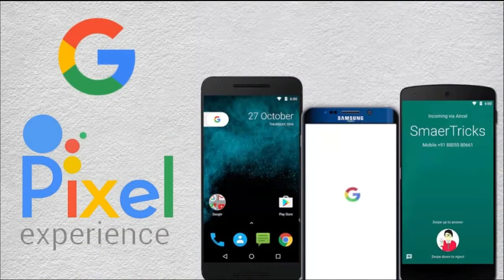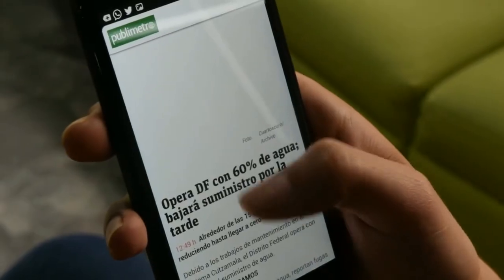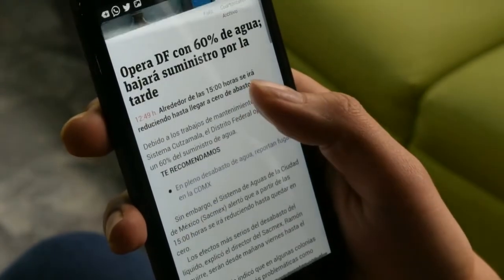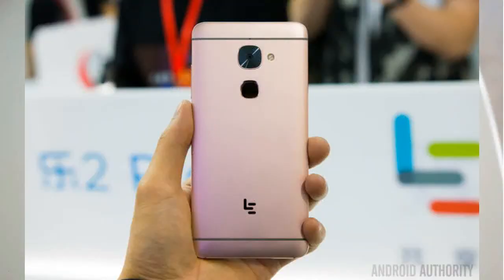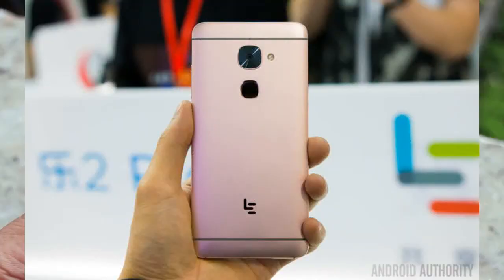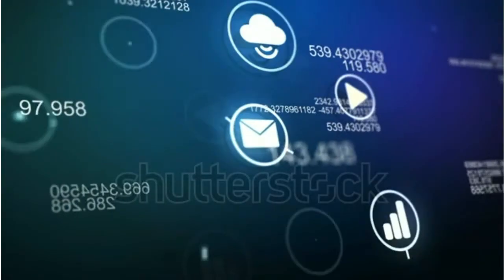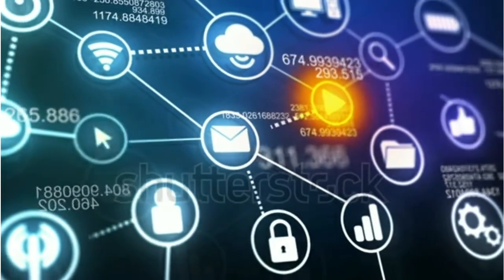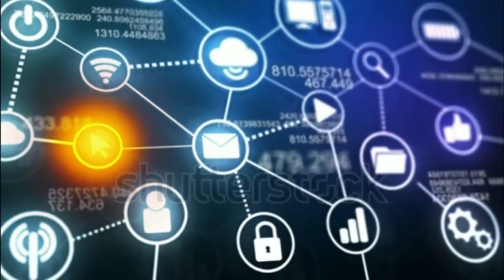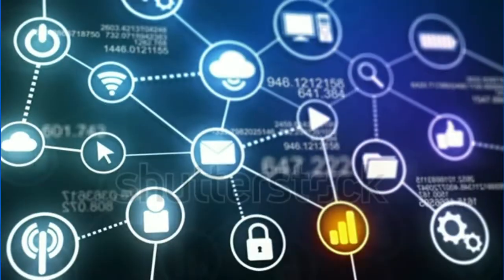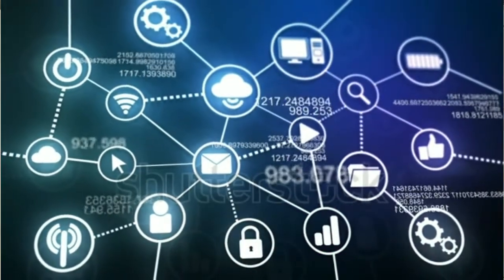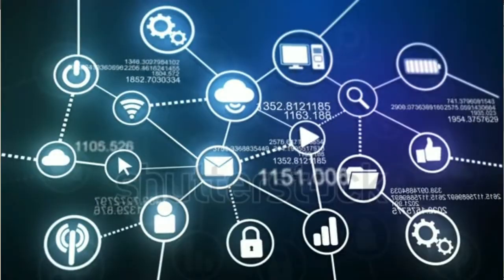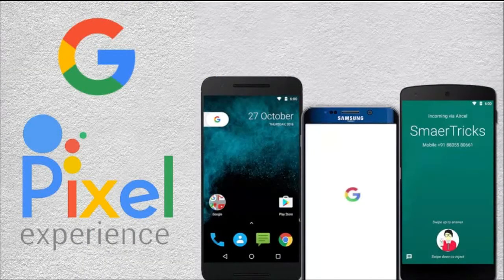Earlier we had shared a ROM based on Android Oreo 8.0. A few days back, Google released the new update Android Oreo 8.1. They planned to release LineageOS 15.1 directly, skipping the 15.0 edition. Here we have shared the unofficial LineageOS 15.1 for LeEco Le2 based on Android 8.1 Oreo, released officially by Google Pixel and Nexus supported devices.